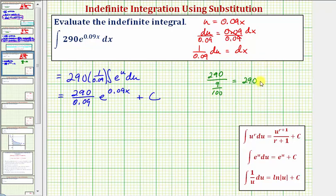we can multiply by the reciprocal of one hundred over nine. So times one hundred over nine. This gives us twenty-nine thousand over nine.